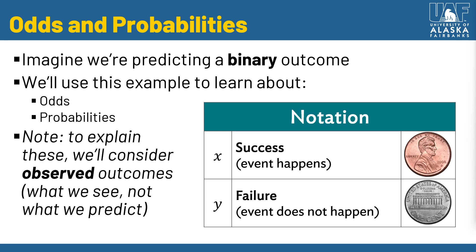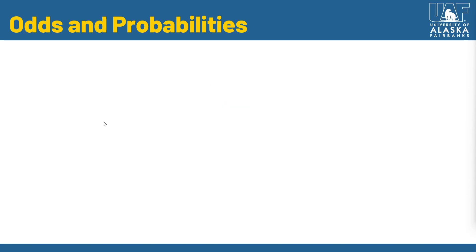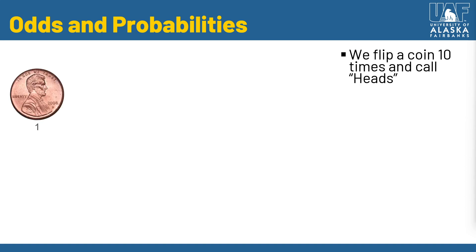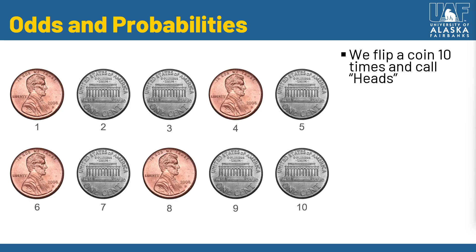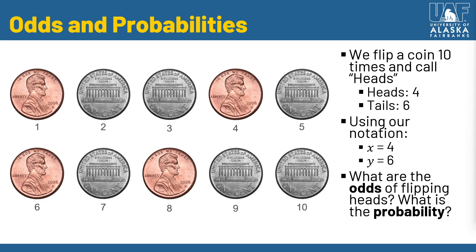Sometimes when you talk about odds and probabilities, people are using these to predict things that might happen in the future. We'll explain this with observed outcomes for simplicity rather than predicting things. Let's say we flip a coin 10 times — heads was our call. The first one is heads, the second one is tails, and so on. If we count it all up, we see four heads and six tails. So x is four and y is six.